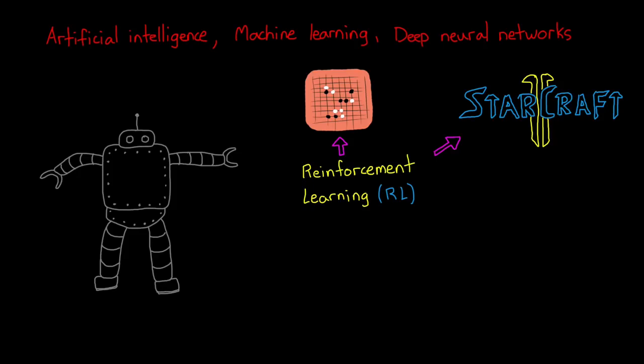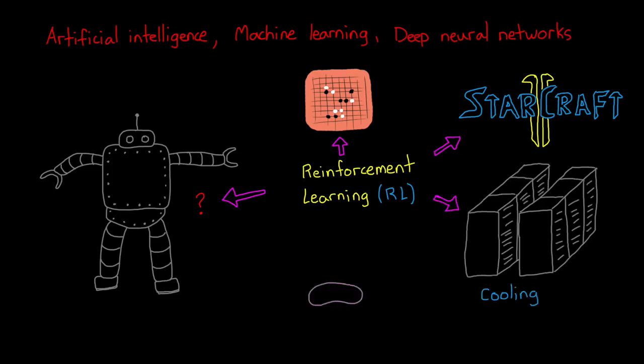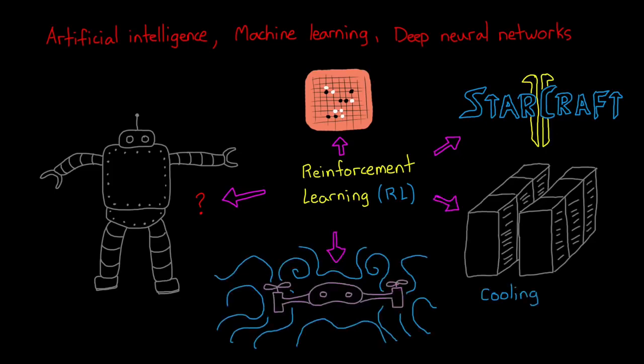So naturally you might be thinking, well if it can do that, why can't I use reinforcement learning to control my robot, or cool my data center, or stabilize a drone in a highly dynamic and turbulent flow? Well let's talk about that.